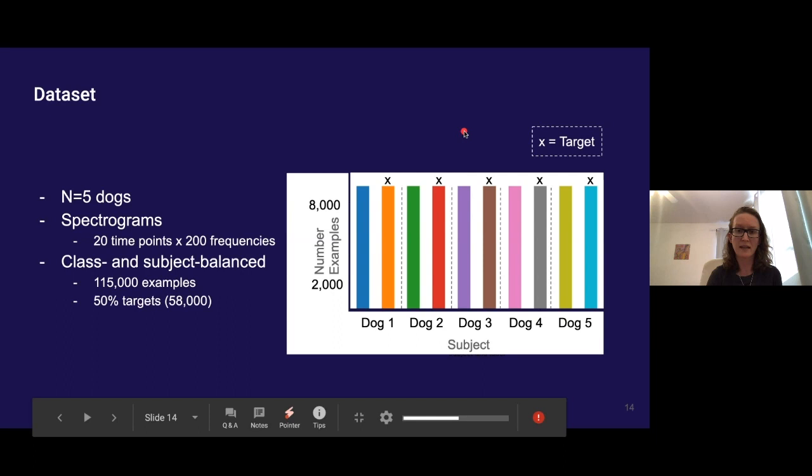The first thing that I did was that I sub-sampled this data so that we had equal representation from all of the dogs and also from both of the classes, the danger episodes that I labeled with X's here and also the safe episodes.